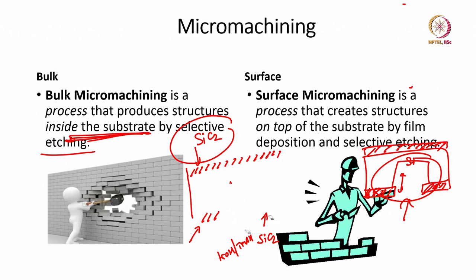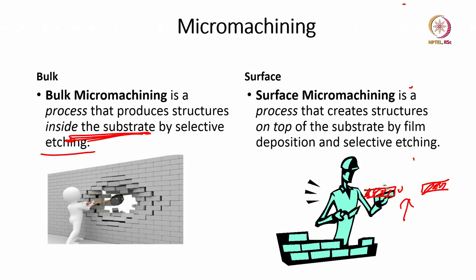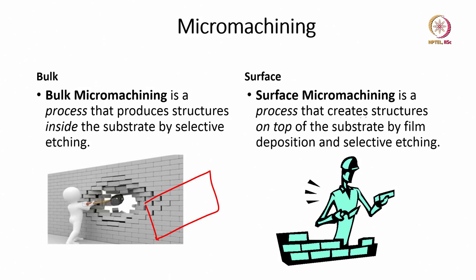When we talk about surface micromachining, the definition changes: surface micromachining is a process that creates structures on top of the substrate by film deposition and selective etching. Let us take an example — micromachining and lithography are straightforward. Surface micromachining creates structures on the top of the substrate.